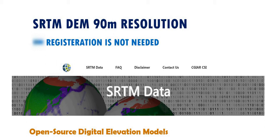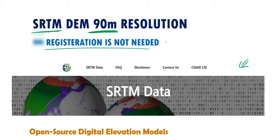Hello everyone and welcome to this new video. In today's video I'm going to explain how to download an SRTM DEM without registration and free of course. The resolution of this DEM is 90 meters - it is an SRTM DEM with a resolution of 90 meters for each pixel. No registration is needed, which is very important, as some websites would ask you to register before downloading any data. This website will not ask you for registration - you can download the data for your area of interest directly.